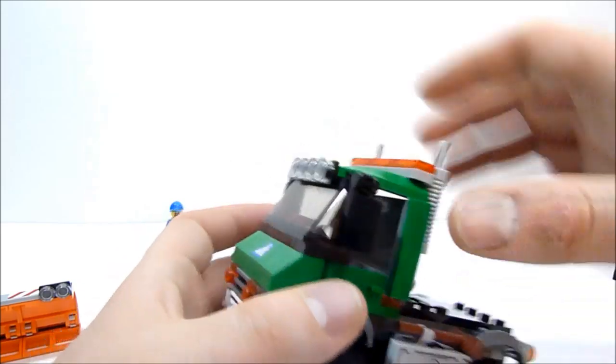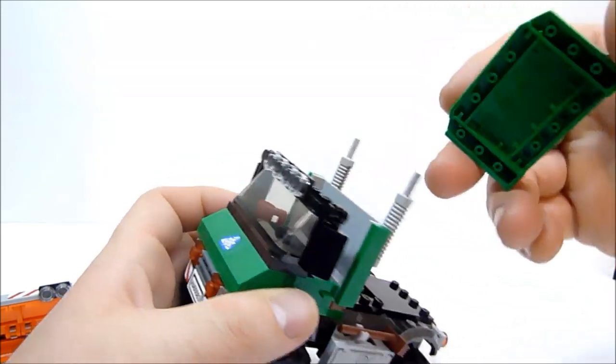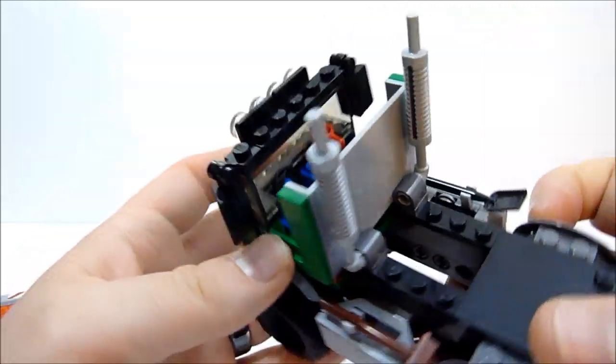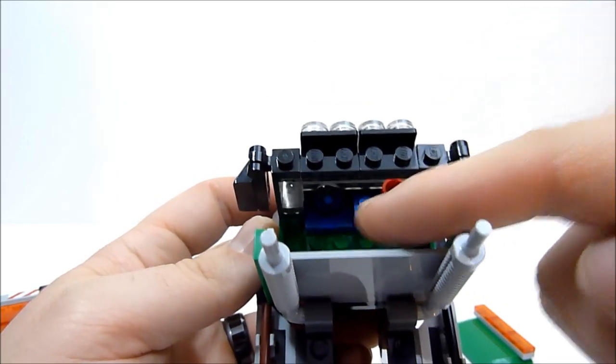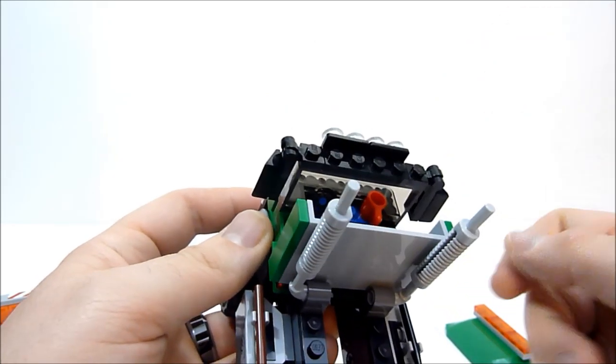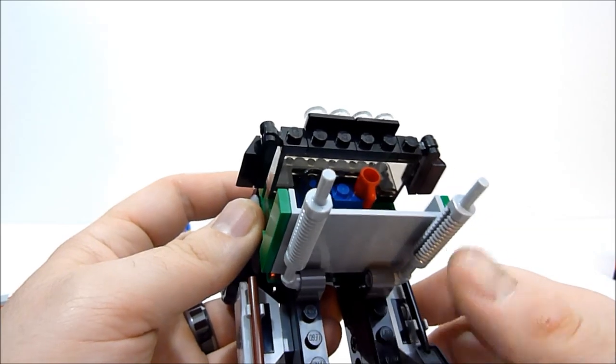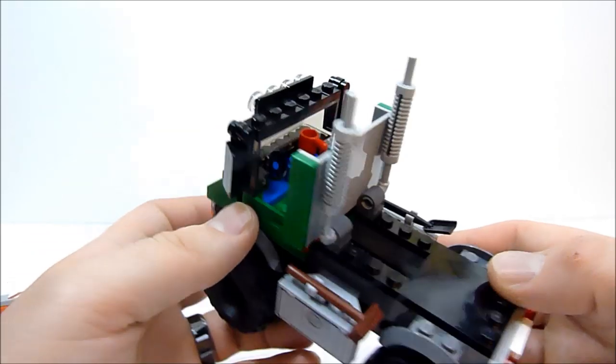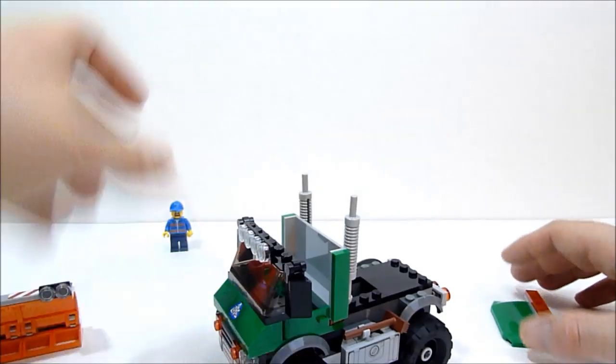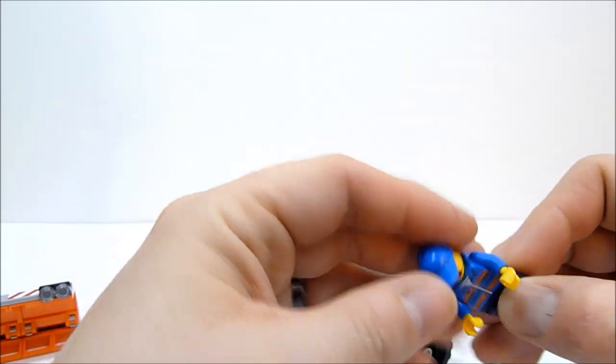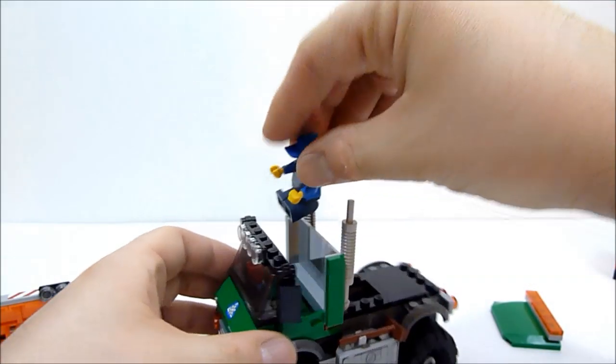Inside the cab here, just pop the top right off. Inside you can see you've got a little steering wheel and a little dashboard with a hot chocolate mug on there, or coffee if you're into that sort of thing. You can just put your little guy right in here.